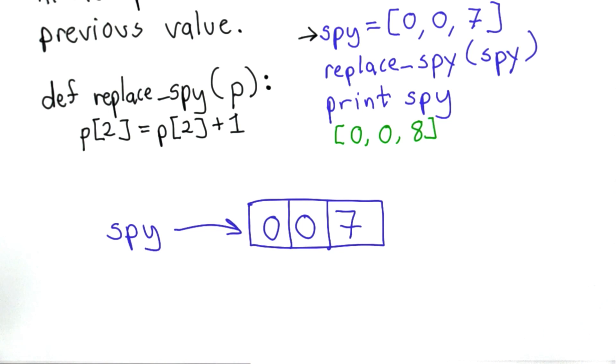We've initialized the variable spy to hold the list containing three elements that are numbers 007. Then we make the call to replaceSpy, passing in spy.